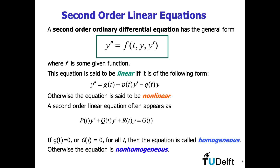Using familiar terminology from linear algebra: if in the equation we replace the right-hand side function g(t) by zero, we call the equation homogeneous. That would be the homogeneous counterpart of the full equation. If g(t) is not zero — if the right-hand side is not zero — then we call the equation non-homogeneous. We also had homogeneous and non-homogeneous equations for first-order differential equations, and their solution spaces are related. The terminology is chosen for good reasons.